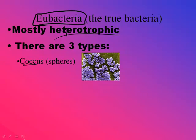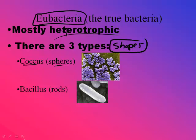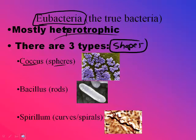Here are the three types you need to know — these are the shapes. Coccus means spheres. Bacillus means rods. And then finally spirillum, which is the curved or spiral-shaped bacteria.